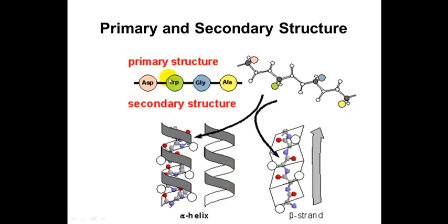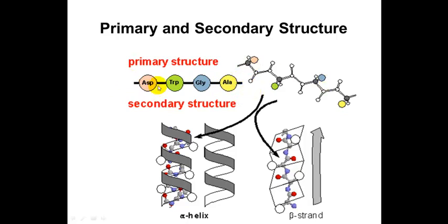There are four levels of protein structure. There's primary structure, which is just the amino acid sequence — such as aspartic acid, tryptophan, glycine, and alanine — from the amino terminus to the carboxy terminus. So amino acid sequence is primary structure.